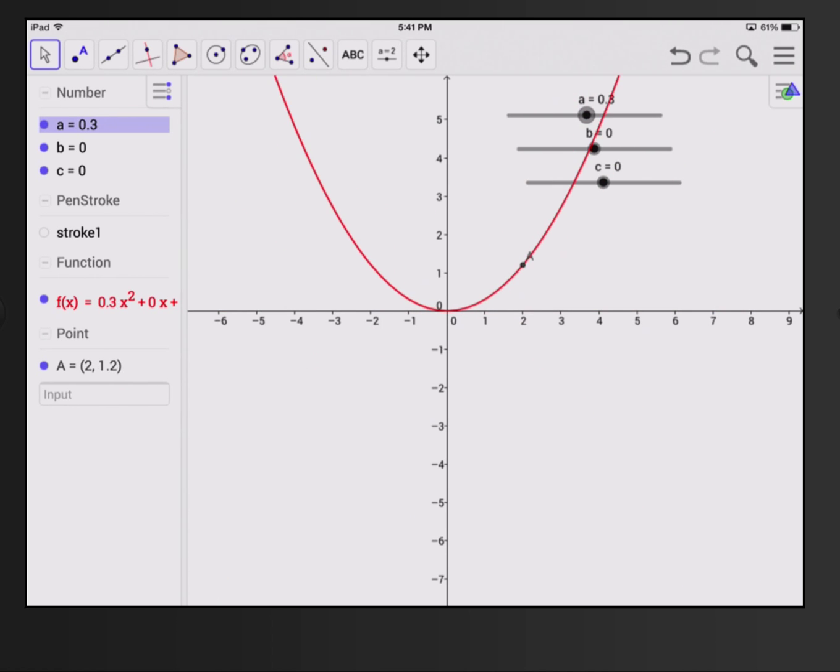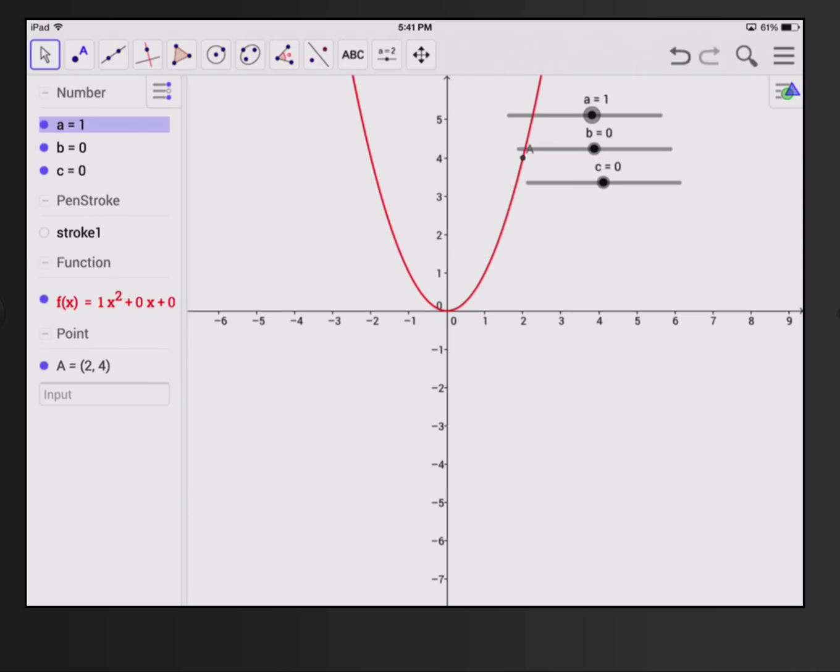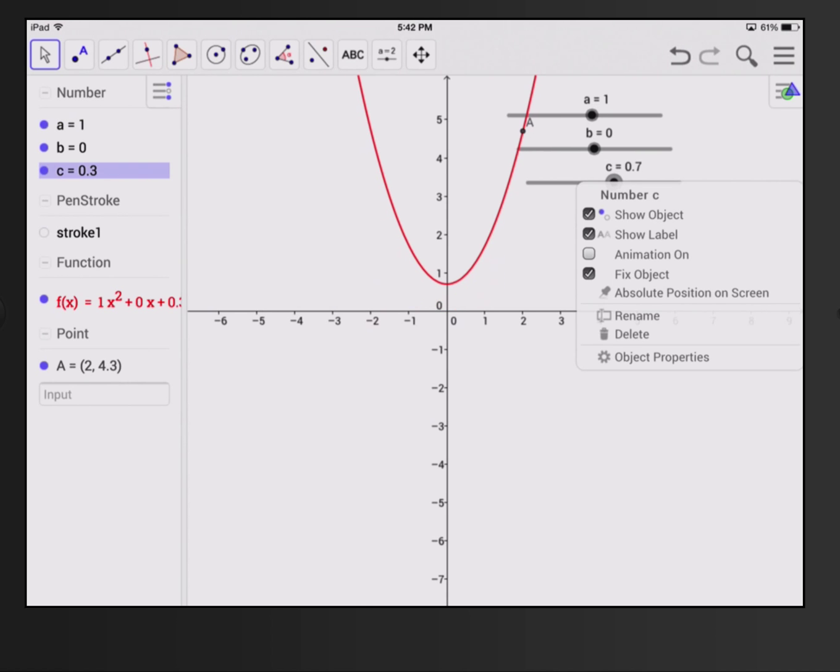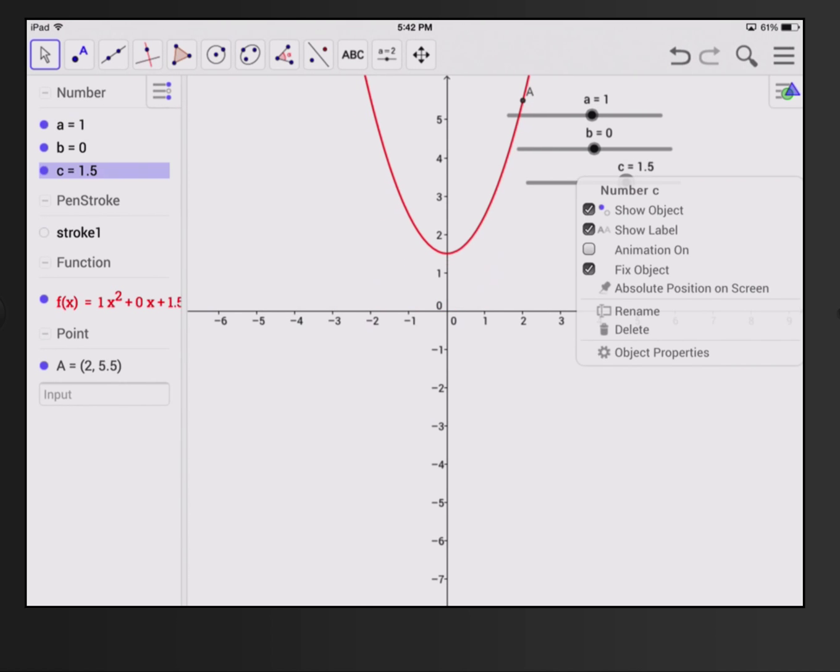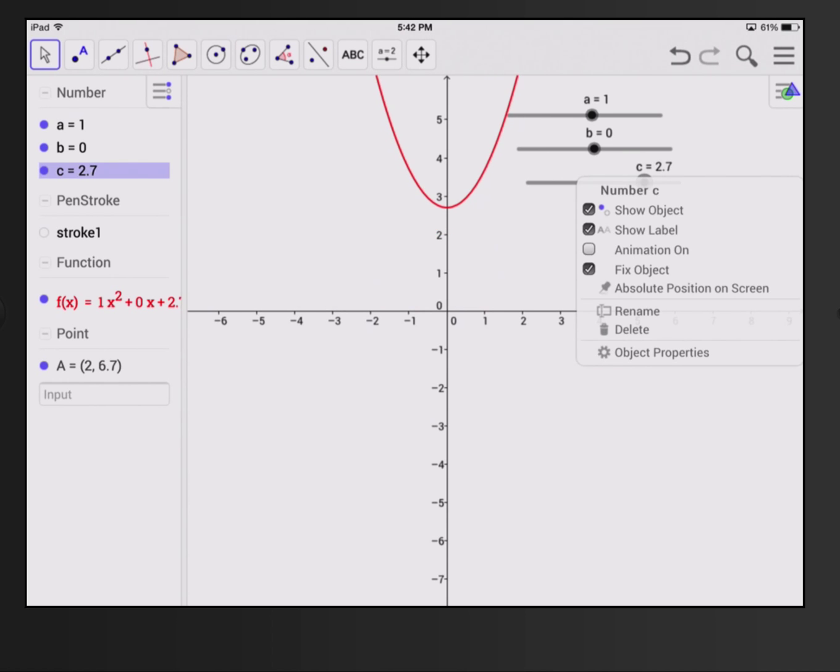All right, so now I'm going to push this A value to 1 and hold that constant while I look at what the C value does. All right. So holding A and B constant, as I increase the value of C, remember, C is just that value that's being added on, all right, and as I add on larger numbers, the whole parabola doesn't change shape, it just simply moves up.